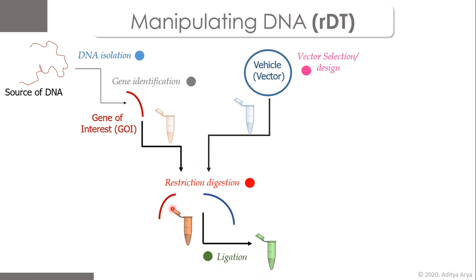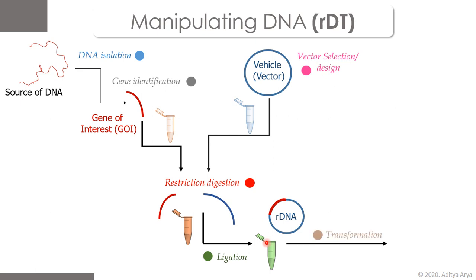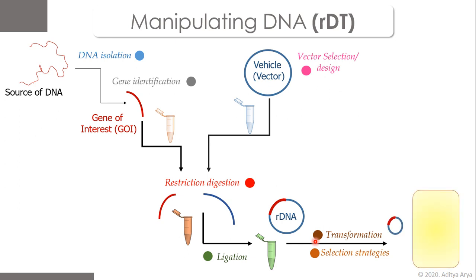Once ligation is done, the vector fragment and the gene of interest are joined together to give rise to a new piece of DNA known as recombinant DNA. This recombinant DNA is not capable of replicating, dividing, or surviving alone unless it is transferred into a living cell. Therefore, the next important step is transformation — the transfer of this recombinant DNA into a host cell.